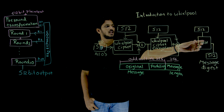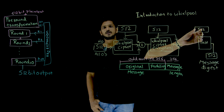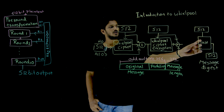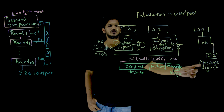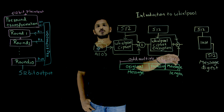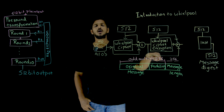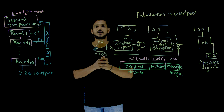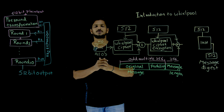In the last round, the final 512-bit output that we get is called the message digest.